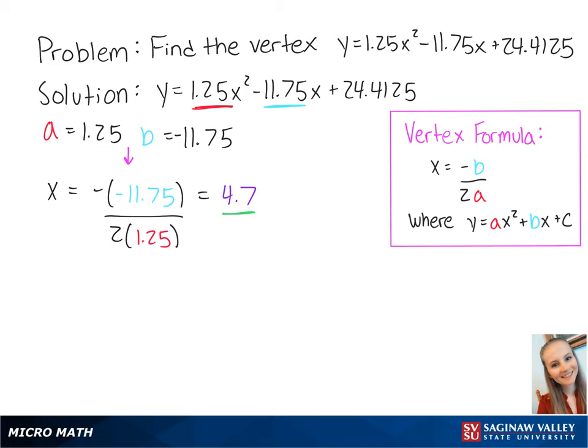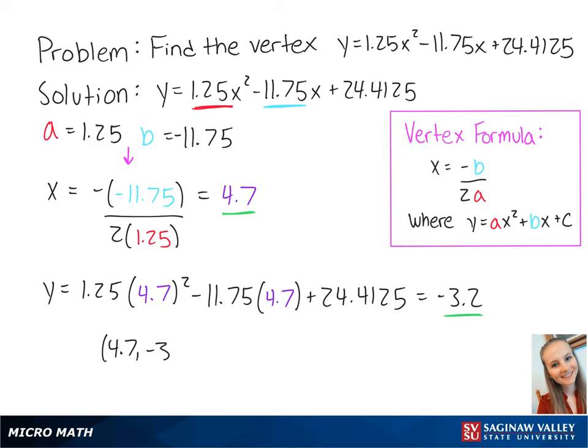This gives us y equals 1.25 times 4.7 squared minus 11.75 times 4.7 plus 24.4125, which is equal to negative 3.2. Now we know that the vertex is 4.7, negative 3.2.